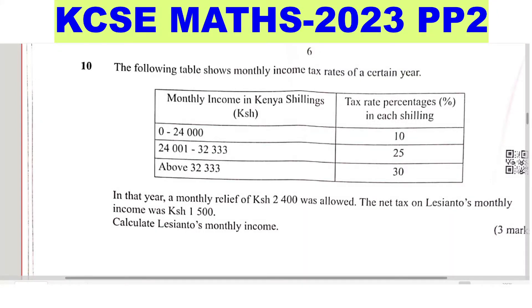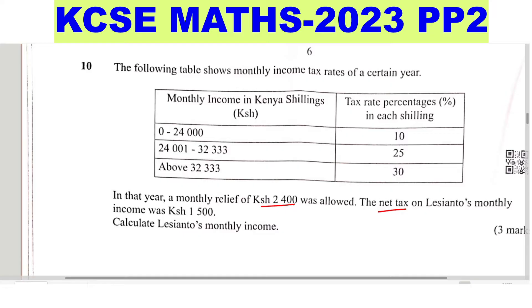Question 10: the following table shows the monthly income tax rates of a certain year. Monthly income in Kenya shillings with the tax rate percentages is given. That year, a monthly relief of 2,400 was allowed. The net tax on a certain person's monthly income was 1,500 shillings. Calculate that person's monthly income. This is a backward taxation problem where you're given the net tax and the relief and you're supposed to get the income.